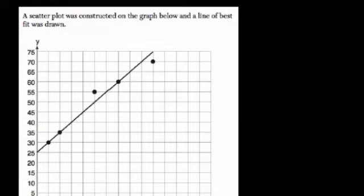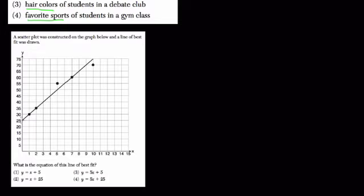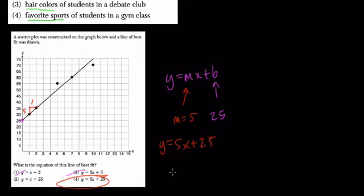A scatter plot was constructed. What is the equation for this line of best fit? Notice our y-intercept is here at 25. So we need the equation of the line in y equals mx plus b form, where the b value is 25, the y-intercept. The slope is the change in y over change in x. I'll pick these two points. I go up five and over one. Slope is the rise over the run, or five over one. So m equals five. So our equation should be y equals 5x plus 25, which is choice four.